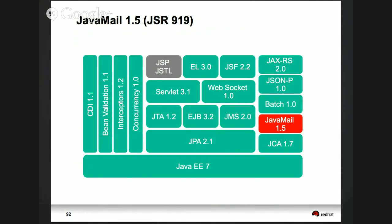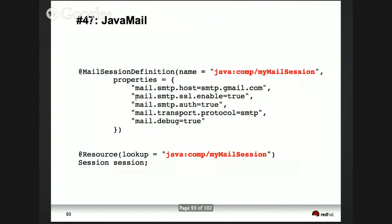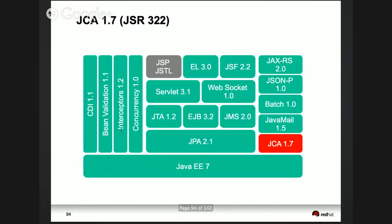Java Mail — not a huge number of additions, but the primary ones allow you to define mail sessions using simple annotations, getting rid of deployment scripts. JCA similarly — connection definitions can be easily added using annotations.